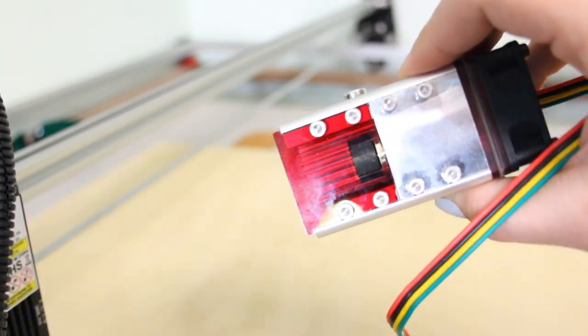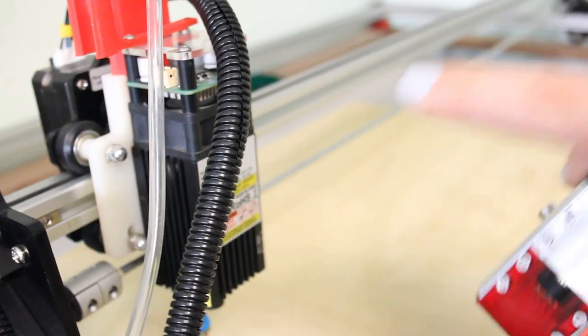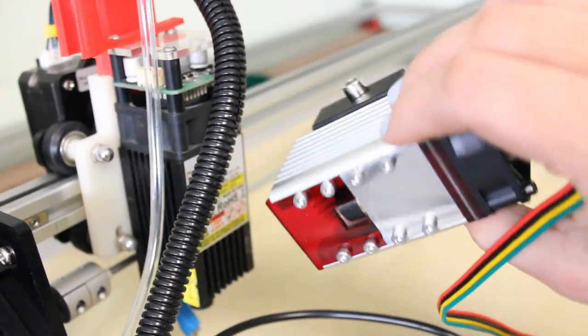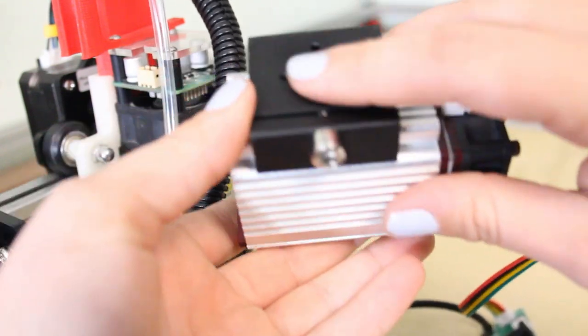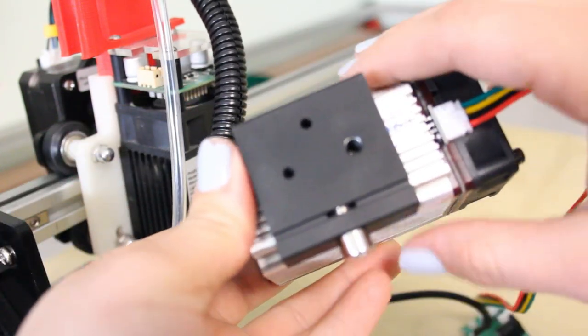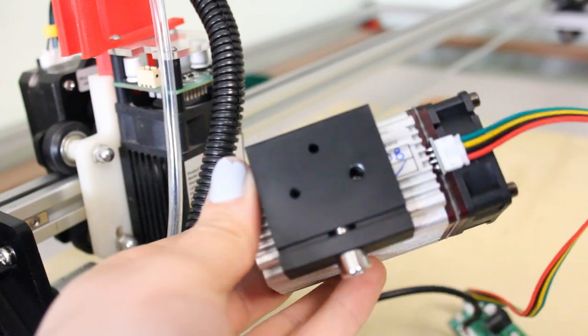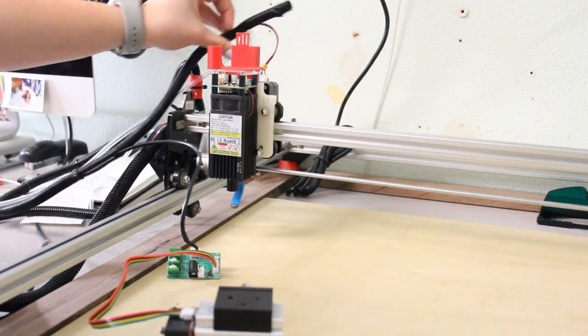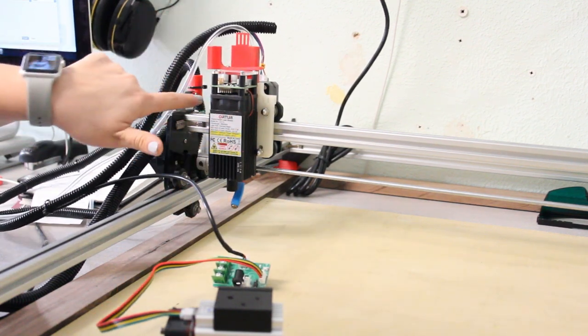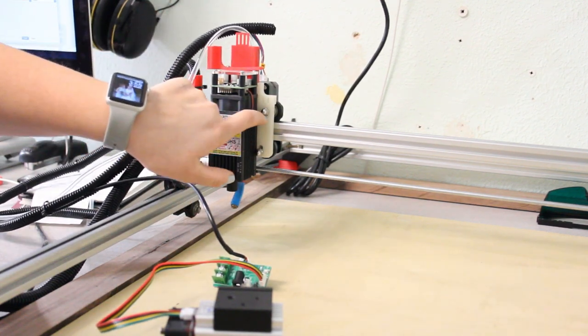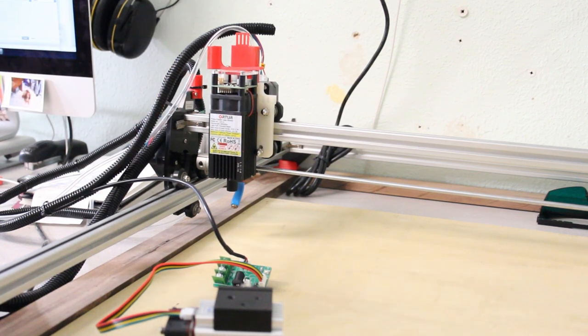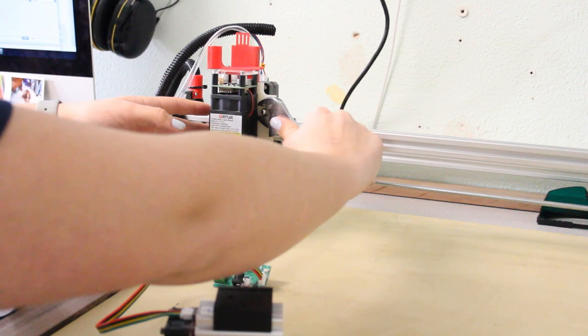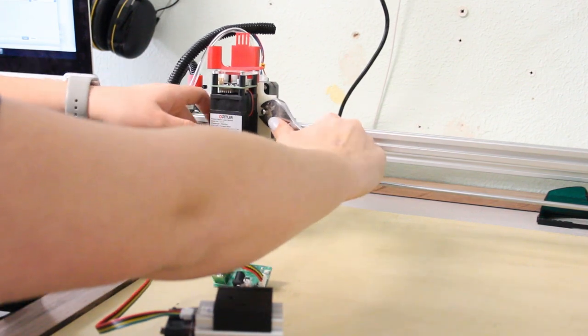So all we have to do now is change the mount on here. We have to drill a couple holes in the mounting plate so that it can fit this mount back here. I'm just going to drill two and then we will be able to mount it and get engraving. So all I'm going to do is unscrew these four bolts here.